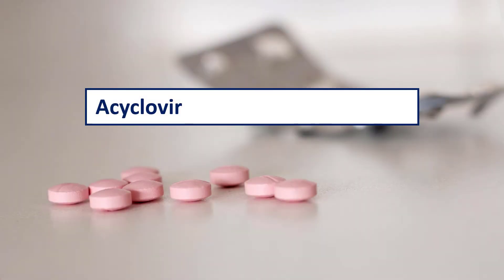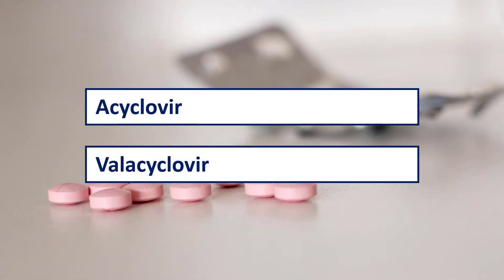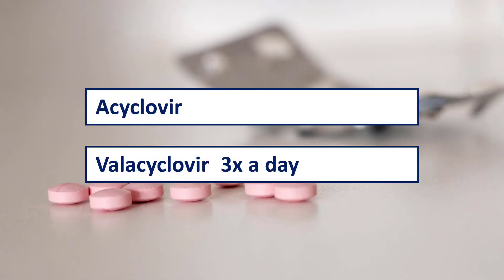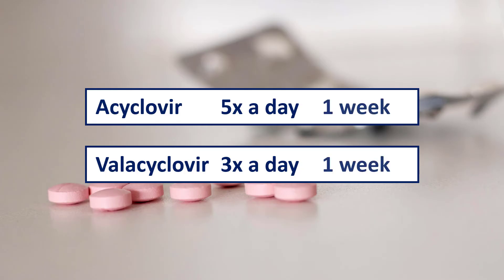Usually you will use either acyclovir or valacyclovir — antivirals directed against herpes viruses. Either one should be adequate, but valacyclovir is a little more convenient because the patient has to take it three times a day instead of five times a day. The duration of treatment should be seven days. As a general rule, we should start treatment within 72 hours after the first appearance of the rash.